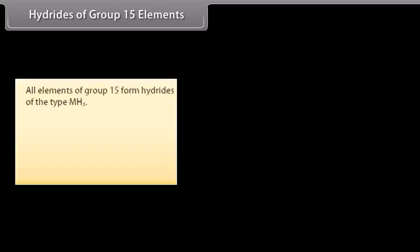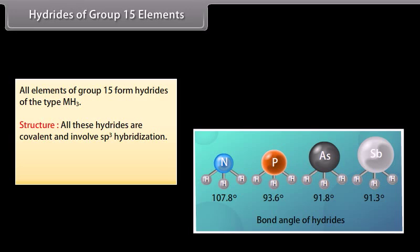All elements of group 15 form hydrides of the type MH3. These hydrides are covalent and involve sp3 hybridization. Three of the four sp3 hybrid orbitals overlap with 1s orbitals of 3 hydrogen atoms to form 3 M-H sigma bonds, while the fourth hybrid orbital contains a lone pair of electrons. The bond angle decreases down the group.